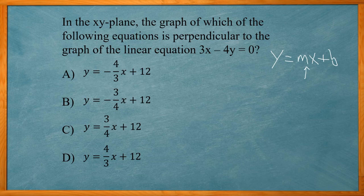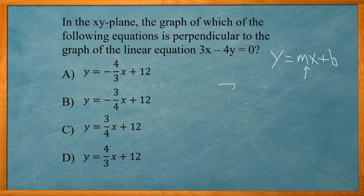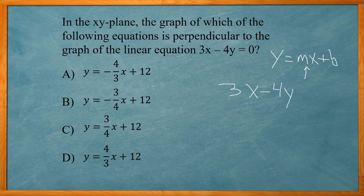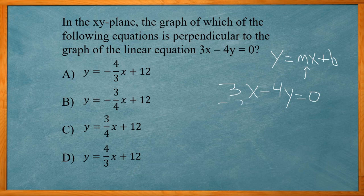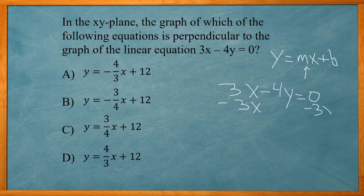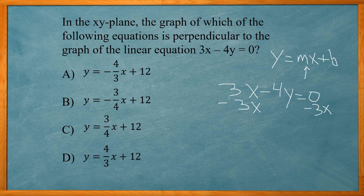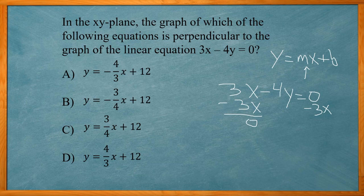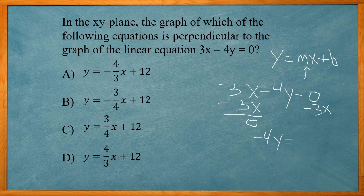So I'm going to take this 3x minus 4y equals zero and get the y by itself. My first step will be to subtract the 3x from both sides because my goal is to get the y by itself, so I need to get rid of every other term that's on that side. This is adding 3x, so I need to subtract 3x to get rid of it. It adds up to zero, makes it disappear from the left side.